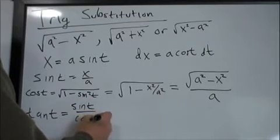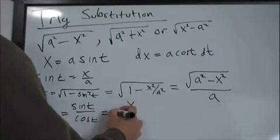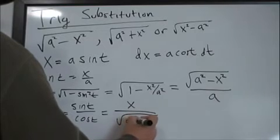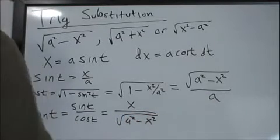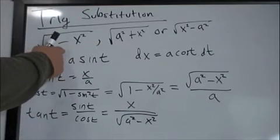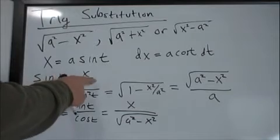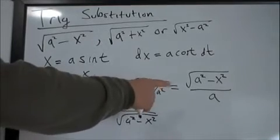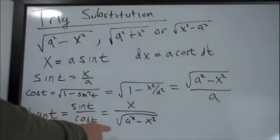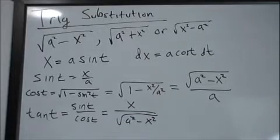We also need the tangent: tan(t) = sin(t)/cos(t), which turns out to be x divided by √(a²-x²). So to summarize the inversion formulas: sin(t) = x/a, cos(t) = √(a²-x²)/a, and tan(t) = x/√(a²-x²). That's all you need to handle integrals involving this form.